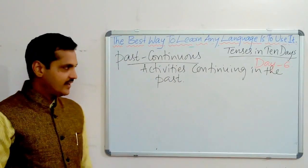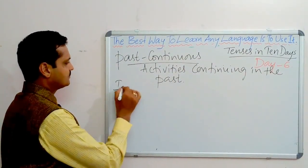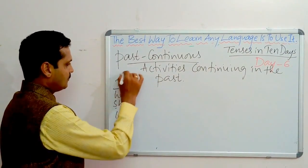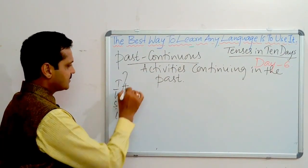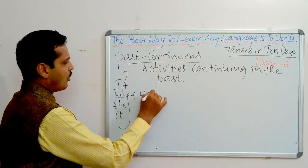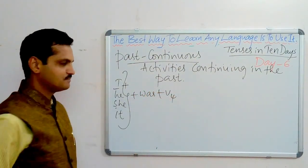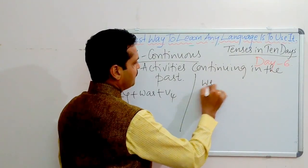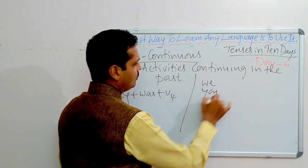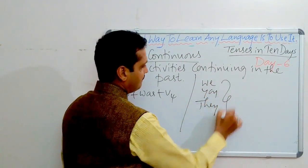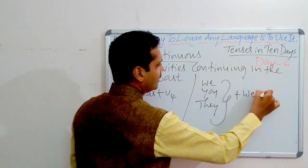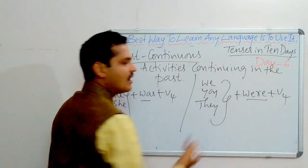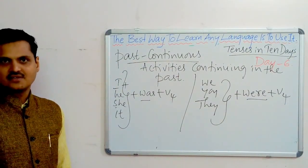The structure is: for I, he, she, it — it would be 'was' plus the V-ing form. And for we, you, they — it would be 'were' plus the V-ing form. Here 'was' and 'were' are the helping verbs.